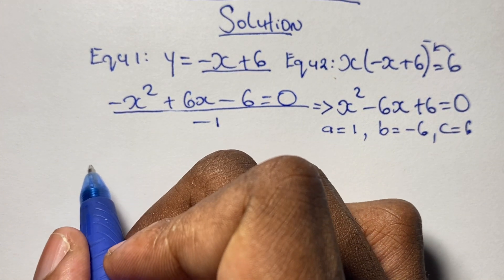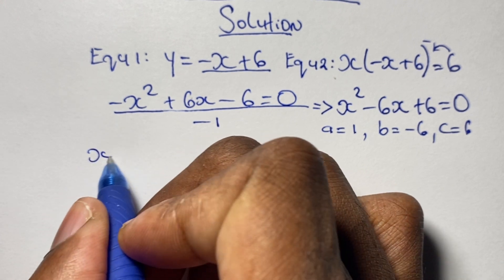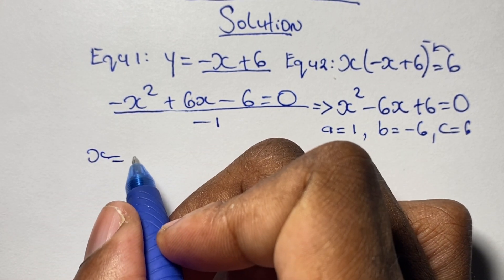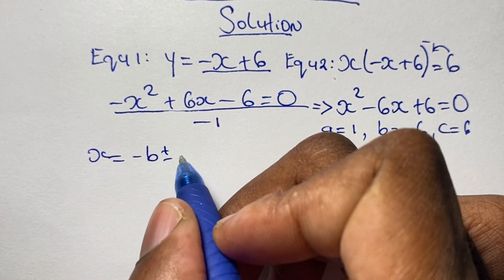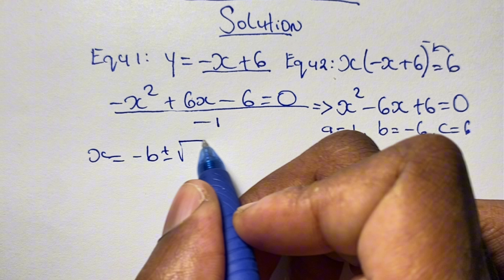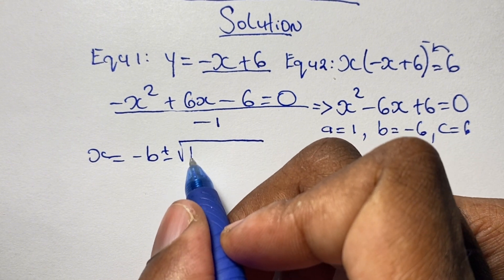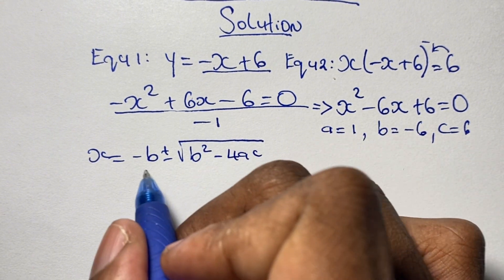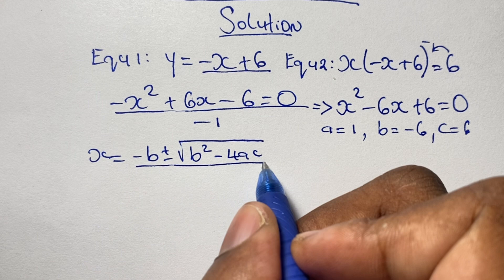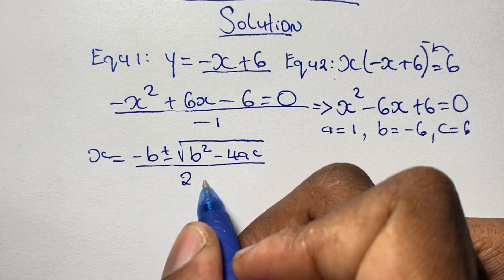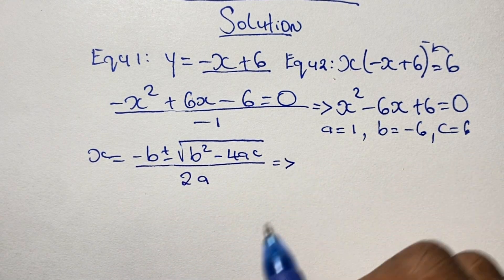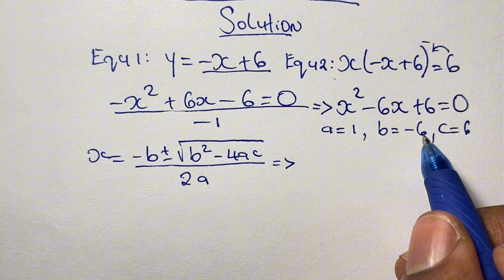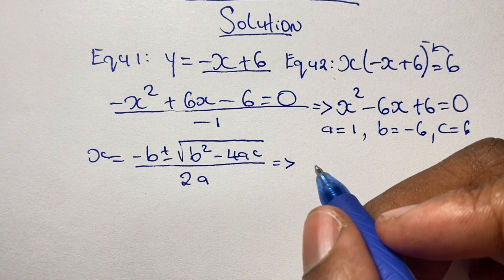From here, we solve for x using the quadratic formula, which states that x is equal to negative b plus or minus the square root of b squared minus 4ac, all over 2 times a. Using the values of a, b, and c, we plug them into our formula.